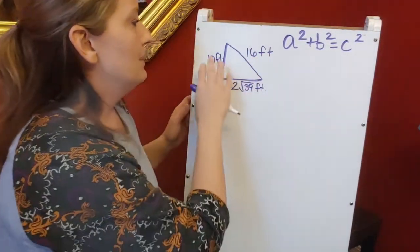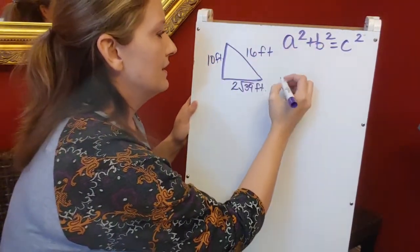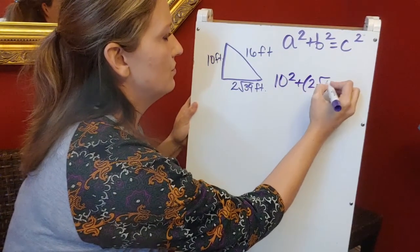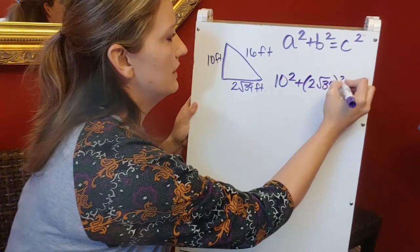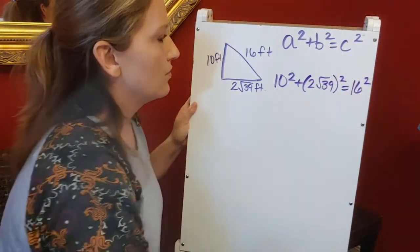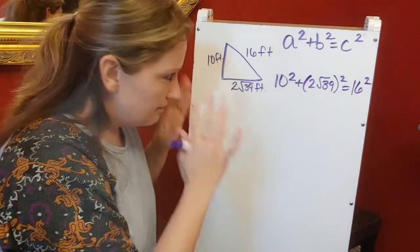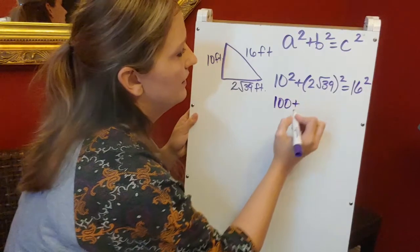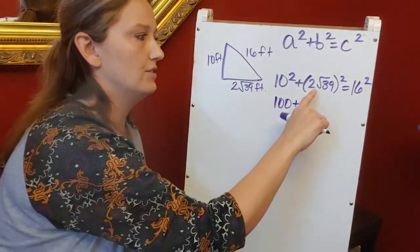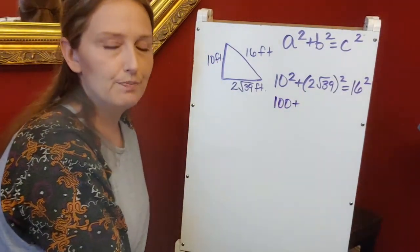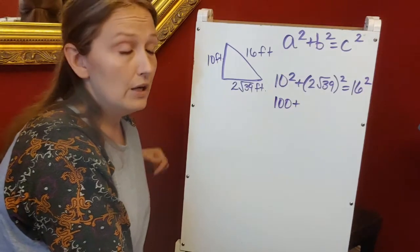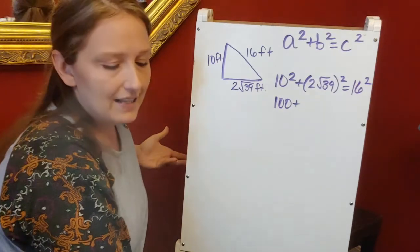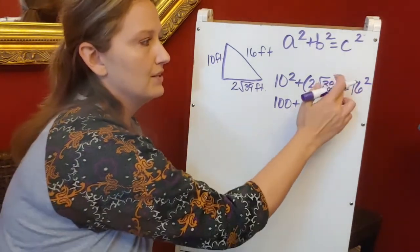is my longest side, so I'm going to plug these numbers into the Pythagorean theorem. 10² + (2√39)² = 16². I'm going to work this equation. 10² is 100. When squaring 2√39, you can plug it in your calculator as (2√39)² and that'll give you your number. You can also look at it as squaring both